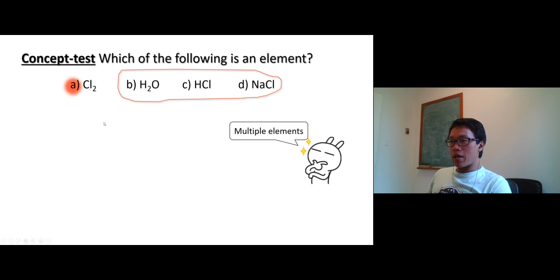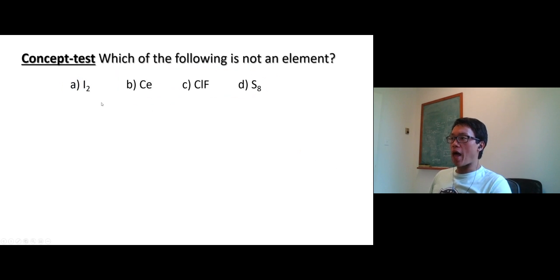You will learn it later. Chlorine is a type of element we call diatomic element, where they exist in pair. We have oxygen gas, nitrogen gas, fluorine gas. Those exist in pair. Hydrogen gas also as an example.